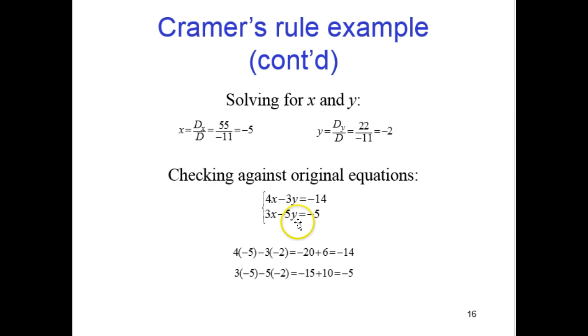And we can plug that back in, check against the original equations. These were our original equations. And you'll see if we substitute them back in, it works out. If we put in a negative 5 and a negative 2 in here, we end up with a negative 14. And if we put the negative 5 and negative 2 in the second equation, it comes out to negative 5.